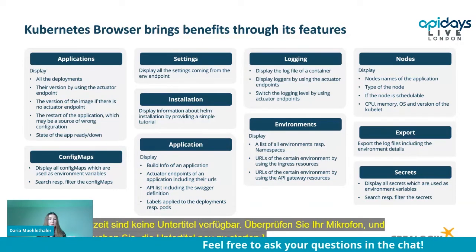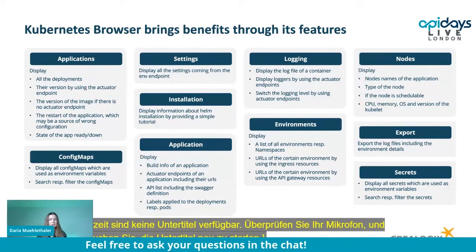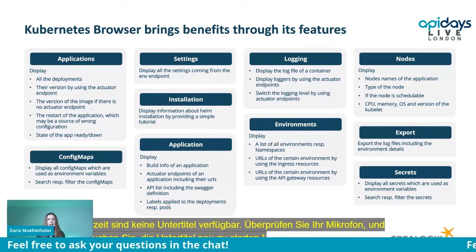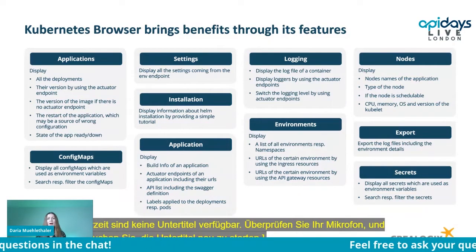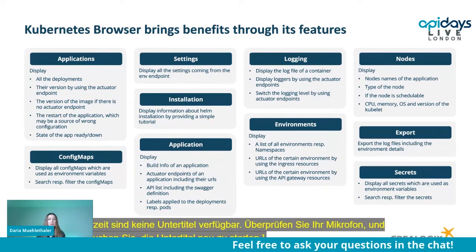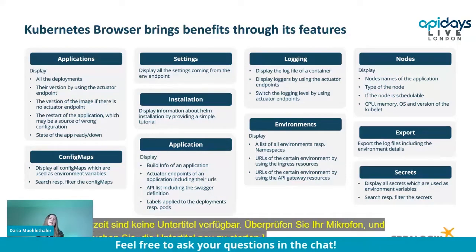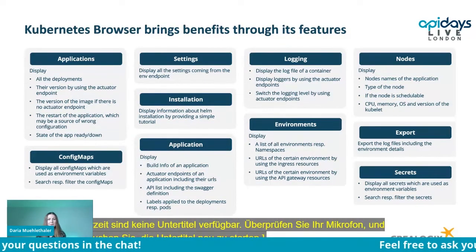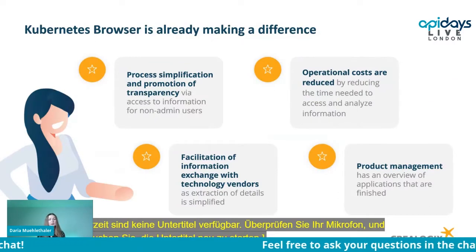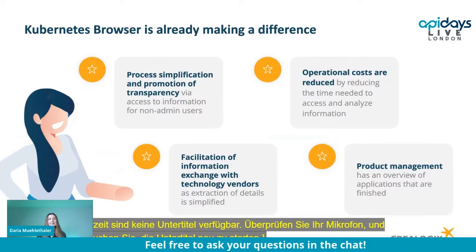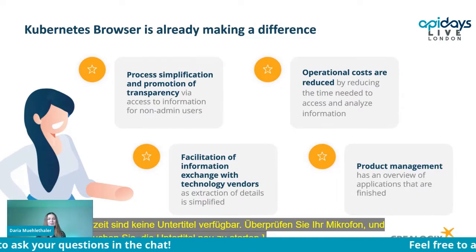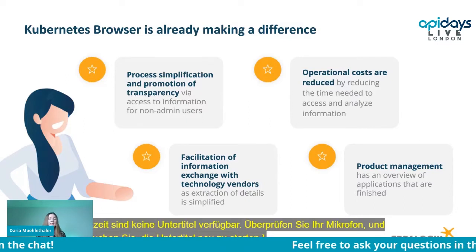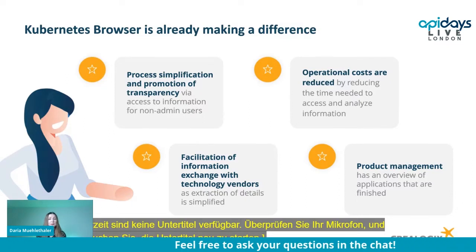We track applications as single applications and whole environments, can generate and download logs, do exports, check information for nodes and config maps, and play with settings to find the root cause of certain problems. Initially this started as a small DevOps initiative to help ourselves, but over time it turned out the whole company benefits from it, and our customers do as well.